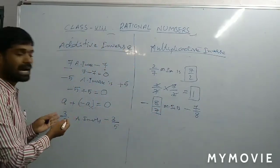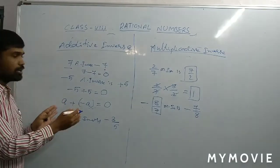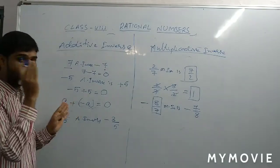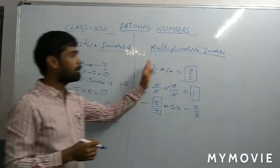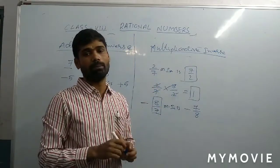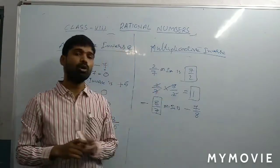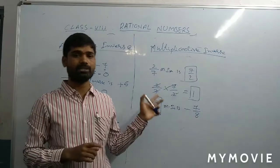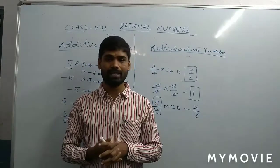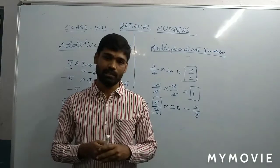In additive inverse, we change the symbol. In multiplicative inverse, we take the reciprocal. Please practice more problems based on this topic so that you understand more perfectly. Thank you for watching.